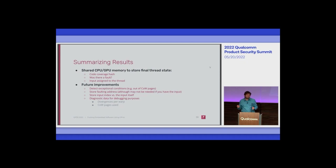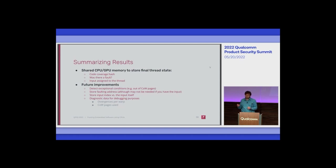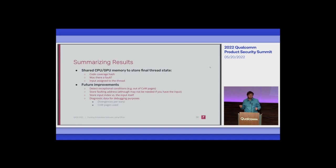Then you execute and get some output. Right now in my limited prototype I calculate a coverage hash of the code coverage, record whether there was a fault and the faulting address, record the input assigned to this thread, and send it back to the input server — which at this point just acknowledges it. In the future we could detect exceptional conditions like running out of copy-on-write pages to possibly recompile and reset some settings, and do better diagnostics.